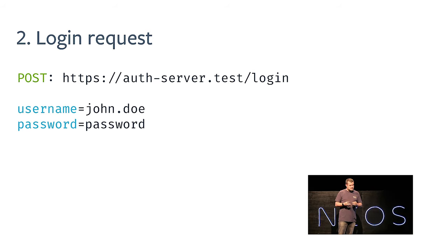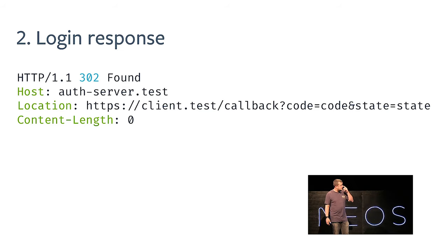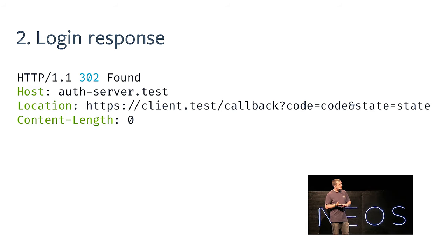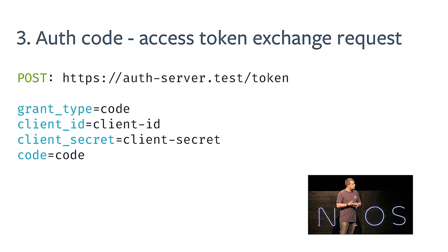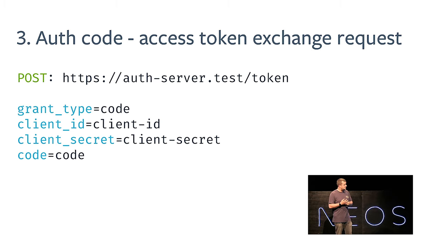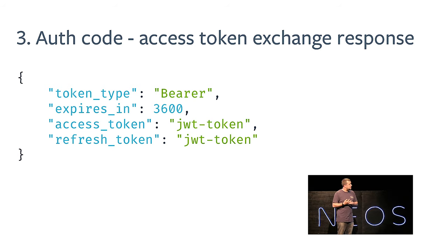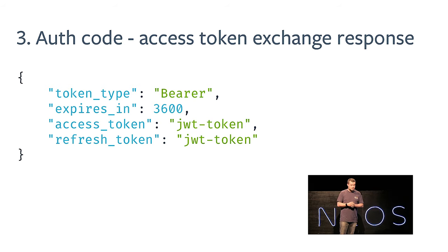The authorization server validates these credentials, and when everything is fine, it sends back a redirect to the browser with the callback URL for the client, the authorization code attached, and the state parameter from the initial request. The client application can now validate the state to confirm nothing was tampered with, then use the code parameter to exchange it for an access token. This is done with a POST request in the backend channel — invisible to the browser — and here you also pass the client secret and the authorization code. When everything is fine, you get back the access token response, which tells you the token type is Bearer, the time span until expiration, and of course the access token itself — the actual JWT to use for accessing other APIs.